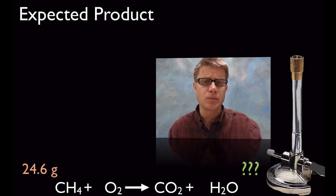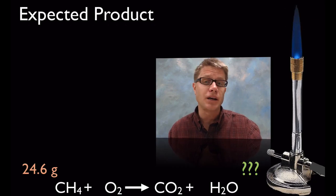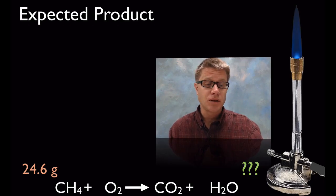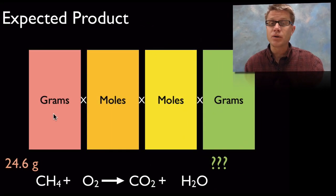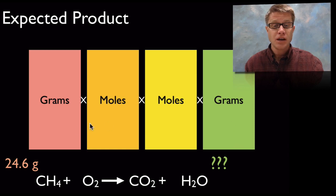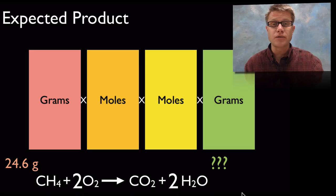First, let's say we're trying to figure out the expected products. In this reaction — the burning of methane in a Bunsen burner — we're combining methane gas with oxygen to make carbon dioxide and water. Let's say you're given this problem: given a certain amount of mass of methane, could you figure out how much water is produced? The secret is we can go from the number of grams to the number of moles, then go through a mole conversion, and then go back to grams again. The first thing you have to do is make sure the equation is balanced — that should always be your first step in stoichiometry.